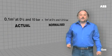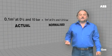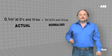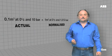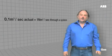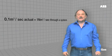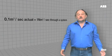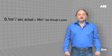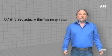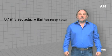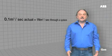Here we have an example of the comparison between normalised volume and actual volume. If we run both of these volumes through a system, 0.1 cubic metres actual per second is actually equal to one normal cubic metre per second. The volume flow is different in both cases. However, the mass flow rate is identical.